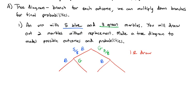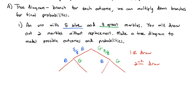It doesn't matter which color we got first — we're going to have the same possible outcomes on the second draw: either blue or green. If we want green first and blue second, we'd go down the green line and then the blue line. But first, let's fill in the individual probabilities, because on the second draw things have changed.